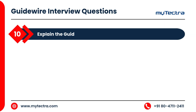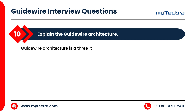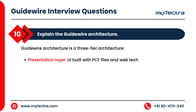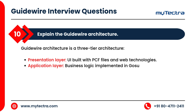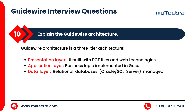Explain the Guidewire architecture. Guidewire uses a three-tier architecture: the Presentation layer — UI built with PCF files and web technologies; the Application layer — business logic implemented in GOSU; and the Data layer — relational databases (Oracle or SQL Server) managed via entity classes and data models.